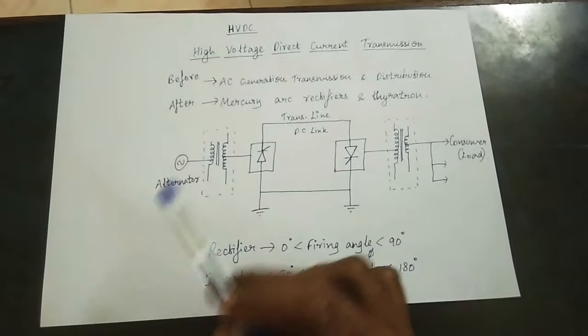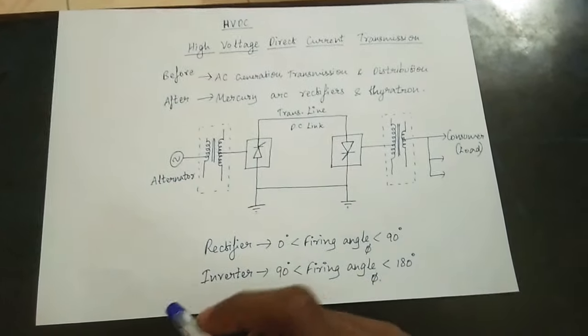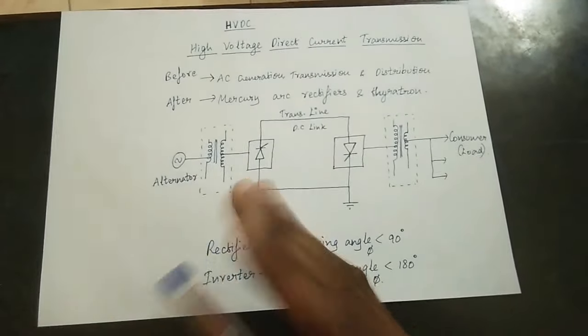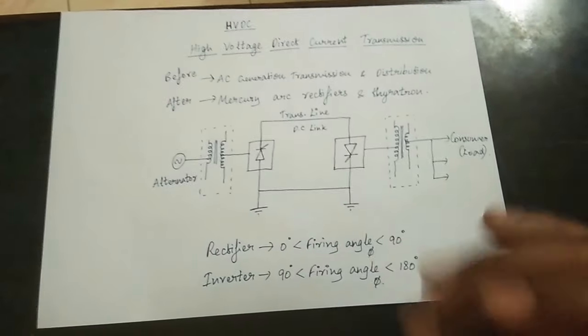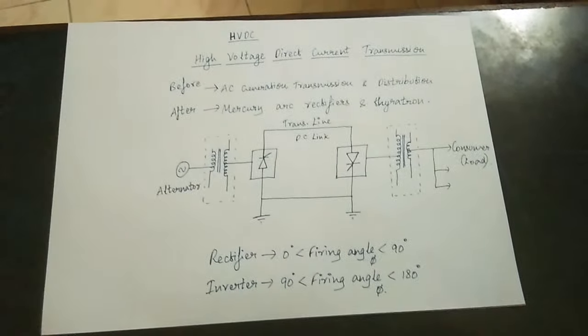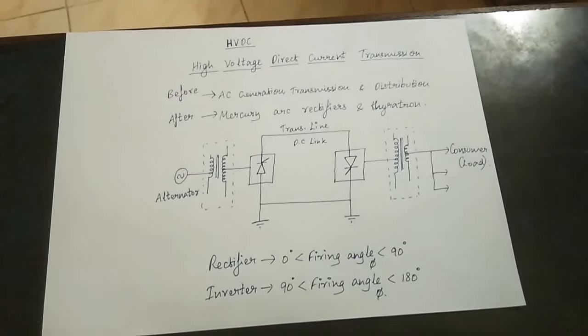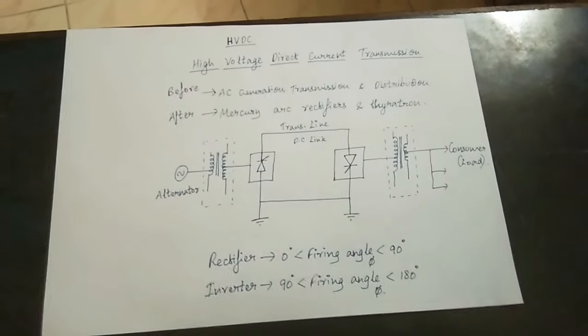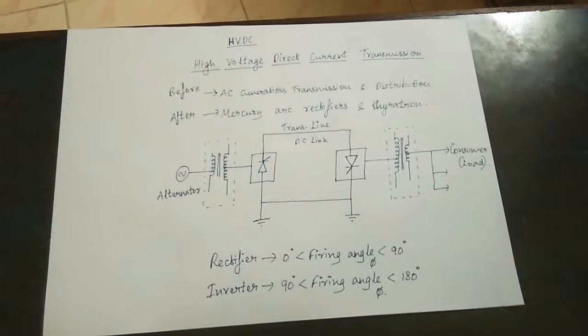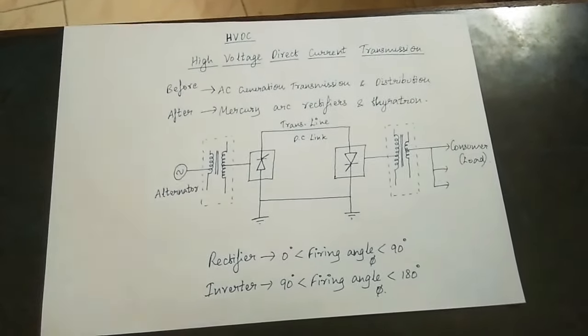First, you can see an alternating source. Then there is a step-up transformer. The transformer works on the principle of electromagnetic induction. The step-up transformer increases the voltage.